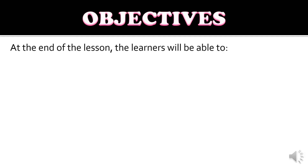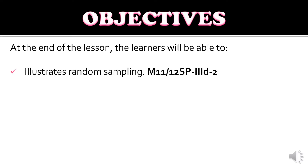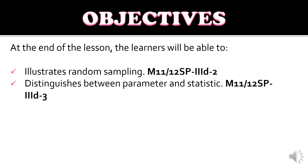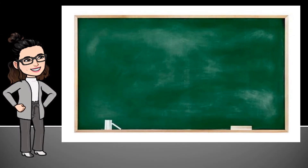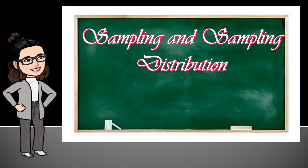For today's objectives, at the end of the lesson, the learners will be able to illustrate random sampling, and distinguish between parameter and statistic. For today's lesson, we have sampling and sampling distribution.